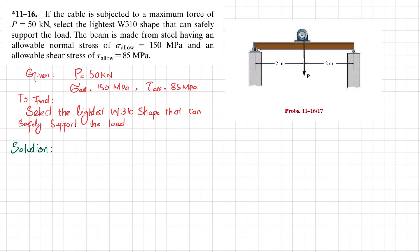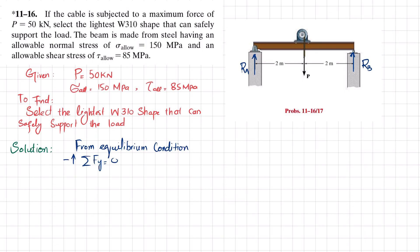If we remove the support at this point, there will be a reaction force Ra. If we remove the other support, there will be a reaction force Rb. From the equilibrium condition, the sum of all forces along the y-direction must equal zero, taking upward forces as positive. So Ra plus Rb minus P (50 kilonewtons) equals zero, giving us Ra plus Rb equals 50. This is equation number one.